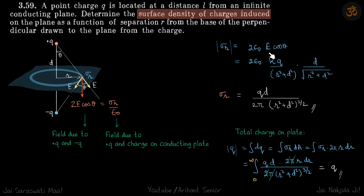Now equating these two, we get sigma_r equals 2 epsilon E cos theta. The electric field due to this charge will be kq by the square of this distance, which is kq by (r² + d²), times cos theta. Cos theta is d divided by the square root of (r² + d²), which gives our answer: the charge density as a function of r is qd by 2π times (r² + d²)^(3/2).